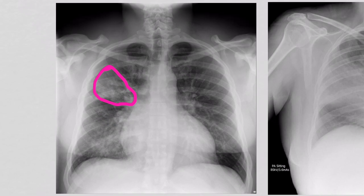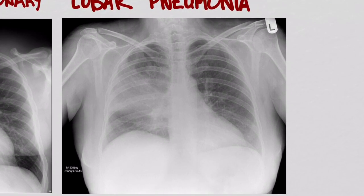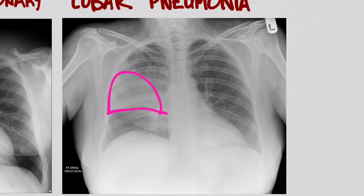The next one is our lobar pneumonia. In this one, an entire lobe is infected. If we trace this white infiltrate here, it looks something like this — so maybe this is a right middle lobe infiltrate.